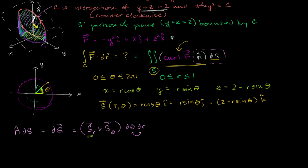As theta increases, we'll be going roughly in that tangential direction. If we take the cross product of those two vectors and apply the right-hand rule — point your index finger in the direction of the radial vector, bend your middle finger in the direction of the tangential vector — your thumb will point outward, which is exactly the direction we need. We need it to point upward to be oriented properly with the direction we're traversing the path. So this is the right order. If the thumb were pointing into the surface or below the plane, we would have to swap the order.